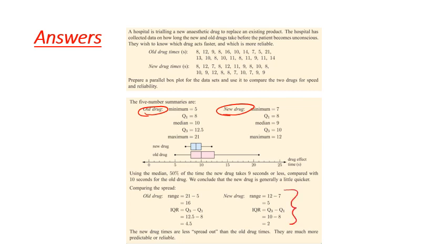The range and the IQR are much smaller than the old drug, which is great for the hospital. So it just looks like the new drug takes less time. It's less spread out than the old drug, which is greater for patients. So hopefully you were able to come to that conclusion.